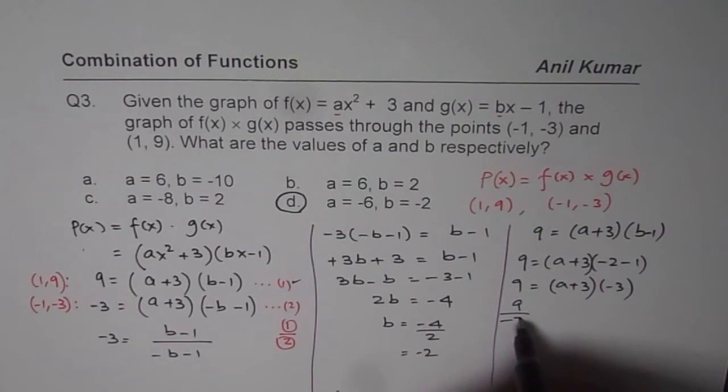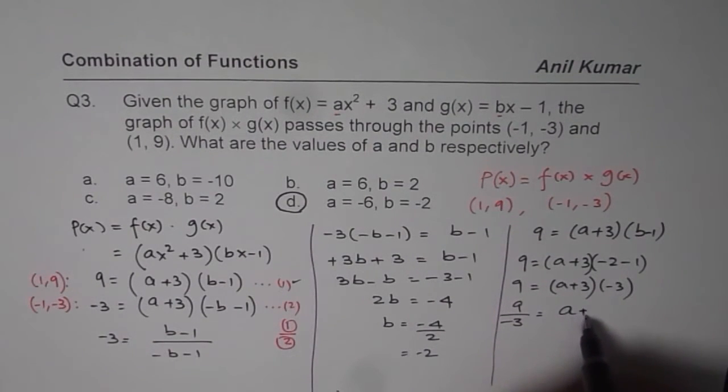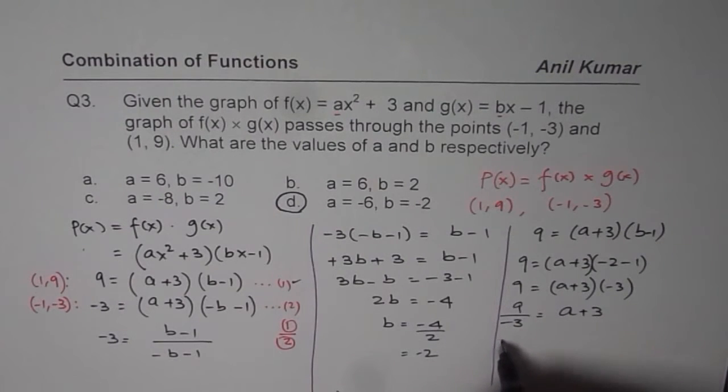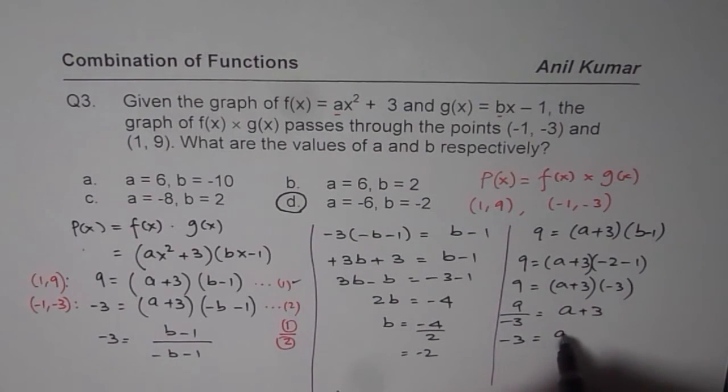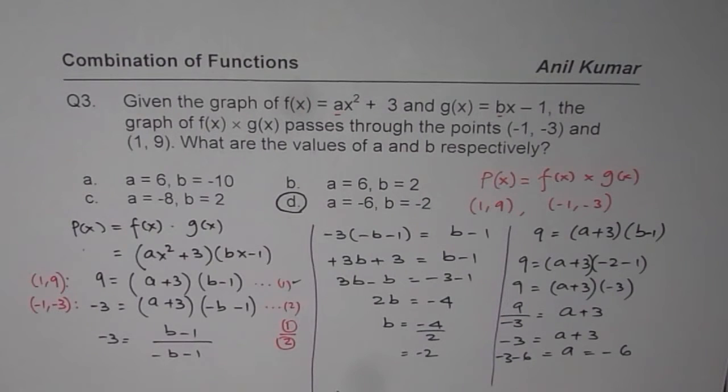Dividing 9 by minus 3, what do we get? 9 divided by minus 3 is minus 3. So, we get minus 3 equals a plus 3 or a equals minus 3 minus 3, which is indeed minus 6.